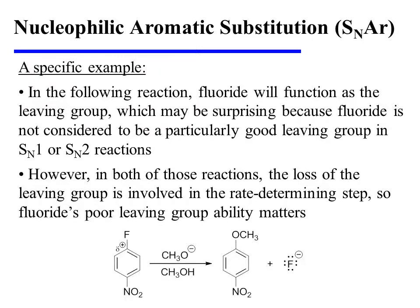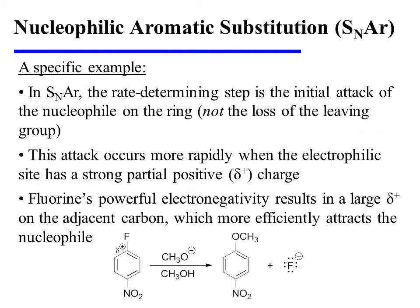Now let's turn our attention to a specific example. In the following reaction, fluoride will function as the leaving group. This may be a bit surprising because fluoride is not considered to be a particularly good leaving group in SN1 or SN2 reactions. However, in both of those reactions, the loss of the leaving group is involved in the rate-determining step, so fluoride's poor leaving group ability matters significantly in those instances. However, in SNAr, the rate-determining step is the initial attack of the nucleophile on the ring, not the loss of the leaving group. Therefore, fluoride's poor leaving group ability is not particularly important since it is not acting as a leaving group during the rate-determining step of the reaction.